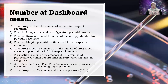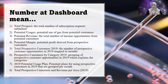The dashboard numbers are explained as follows. Number one is total prospects — the total number of subscription requests submitted. Number two is potential usage — potential use of gas from potential customers. Number three is potential revenue — the total number of income opportunities from potential customers. Number four is potential margin — the potential profit derived from prospective customers. Number five is total prospective customers in 2019.